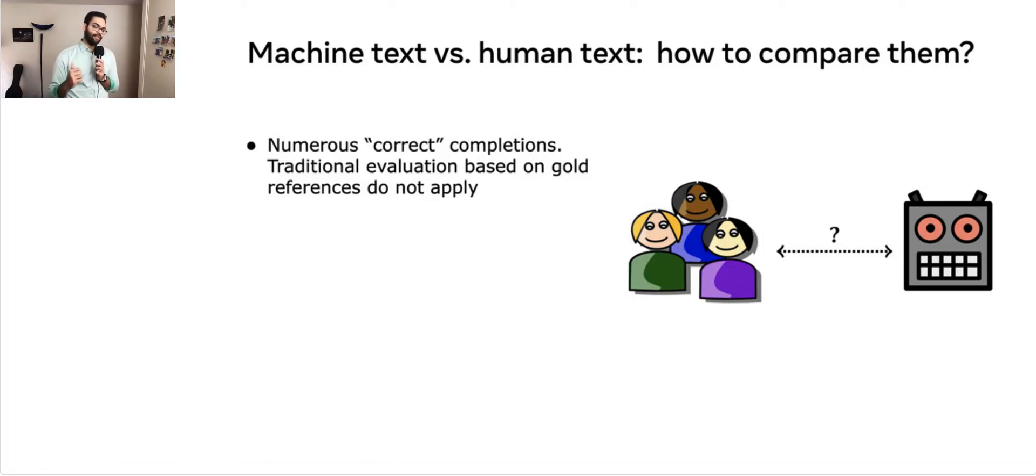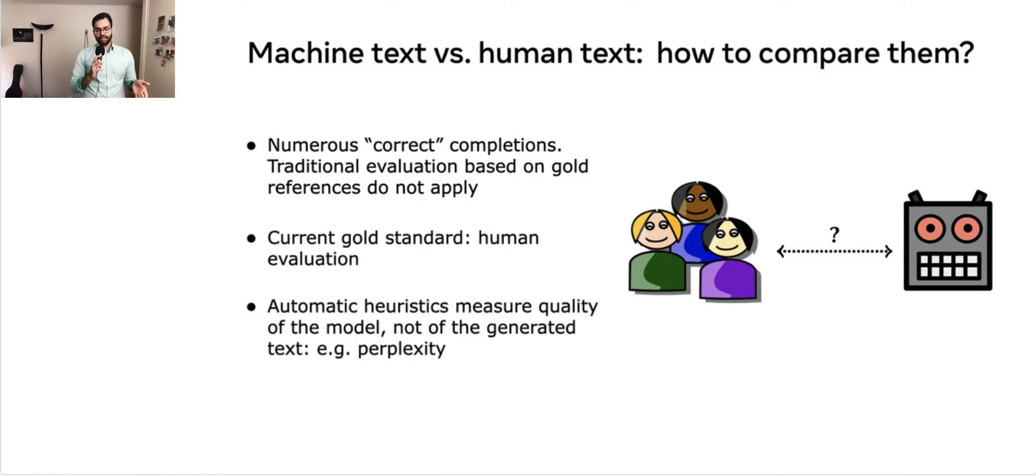As I said previously, there can be multiple correct completions, so traditional evaluation measures based on gold references do not apply to this setting. The current gold standard for comparing machine text with human text is with a human evaluation. However, this is problematic because human evaluation is expensive and unreliable. I will also mention that automatic heuristics such as perplexity are employed, but these heuristics only measure the quality of the model and not of the generated text. Therefore, these heuristic measures cannot capture the effect of the decoding algorithm or how long the generated text is.